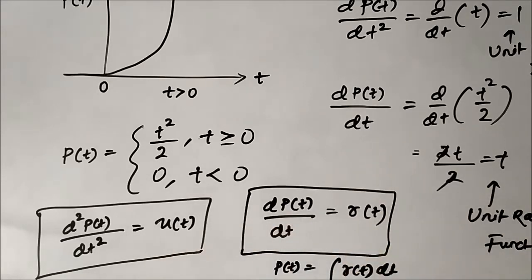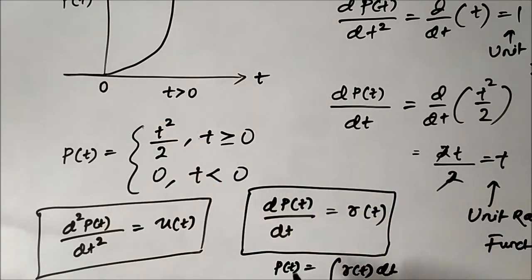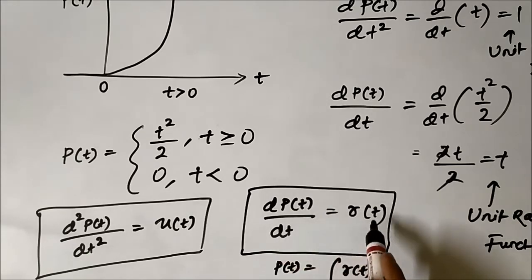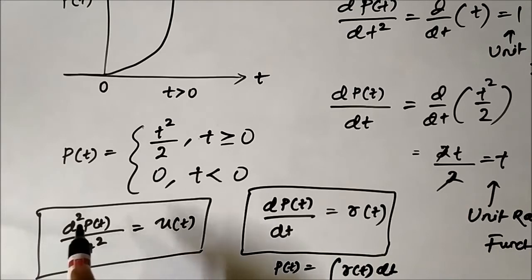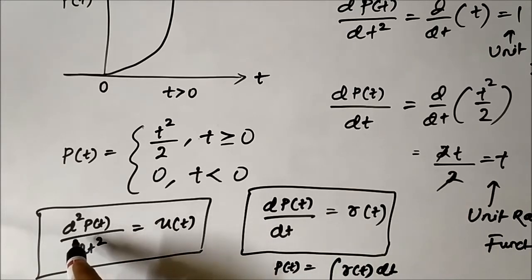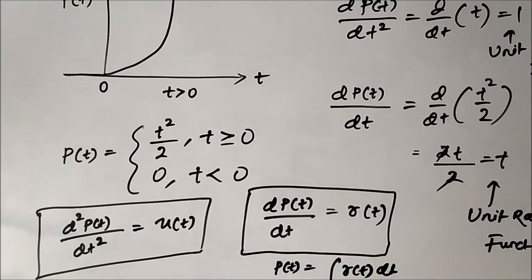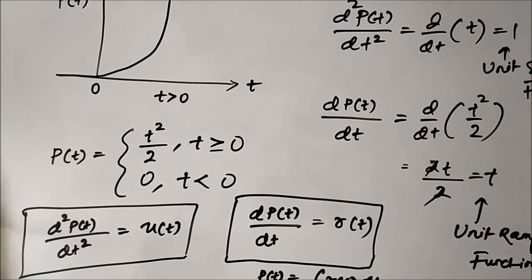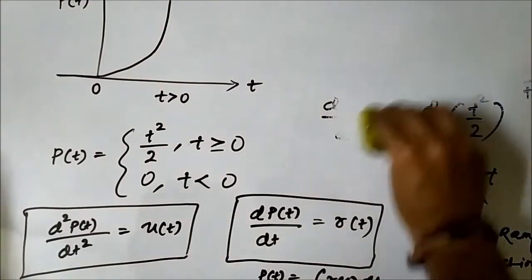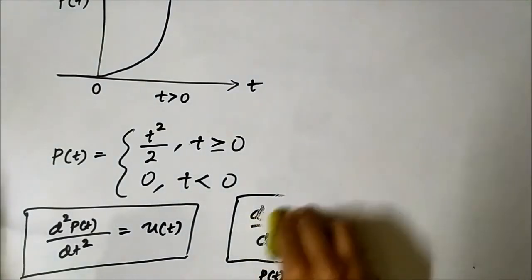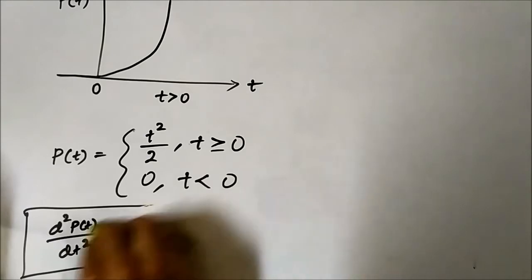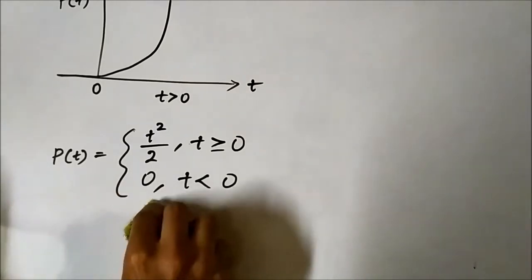These are the two important conclusions to draw from the unit parabolic function: the first-order derivative of the unit parabolic function gives us the unit ramp function, and the second-order derivative gives us the unit step function. This is the continuous time domain representation of the unit parabolic signal.